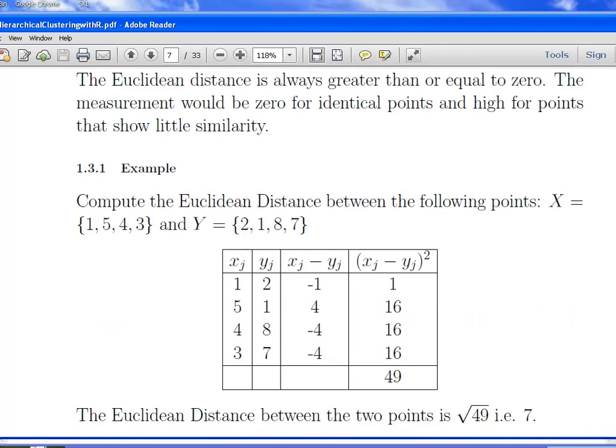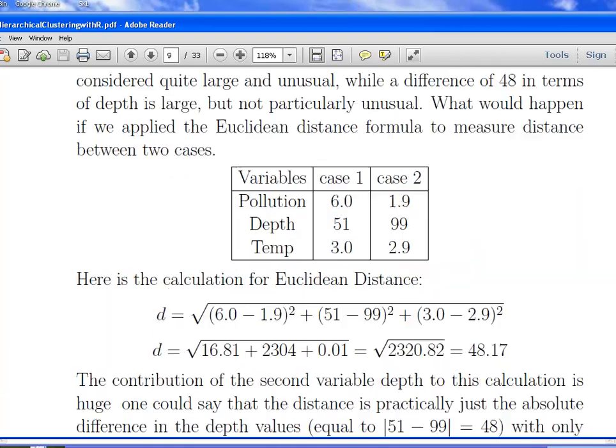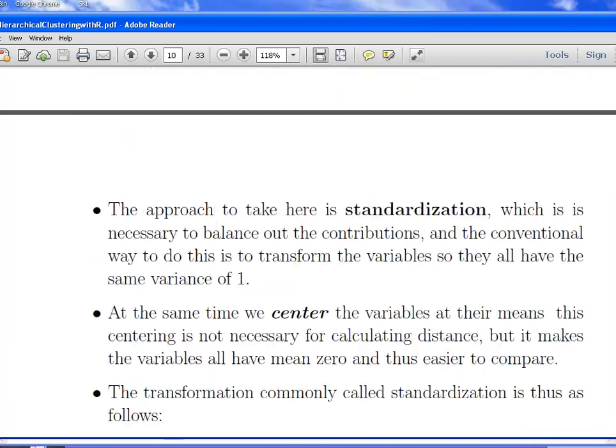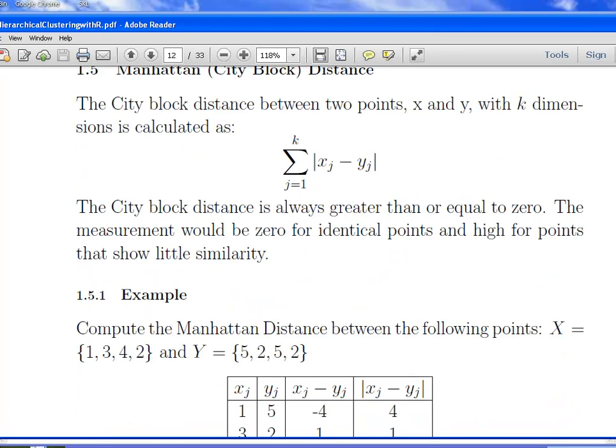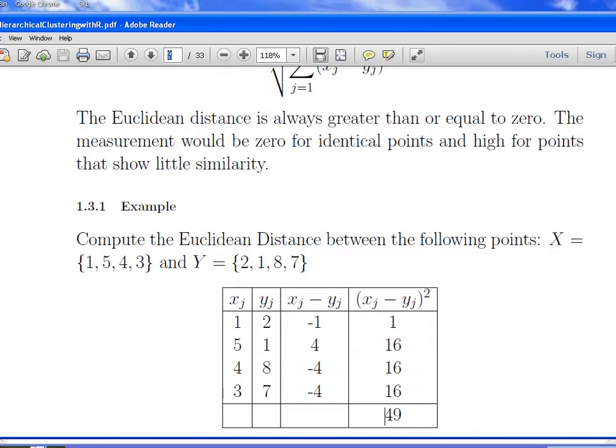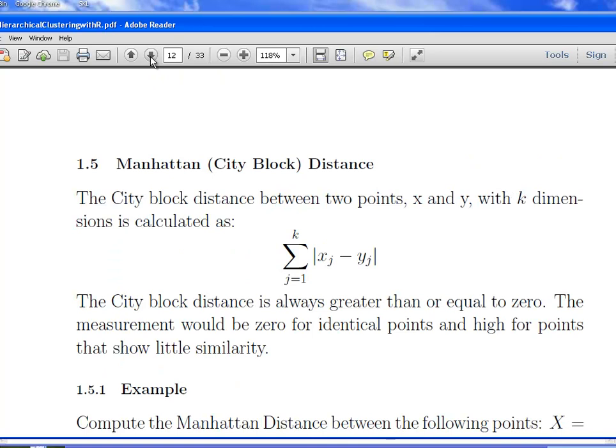I'm going to talk about standardization in the next presentation. But what I'm going to do now is just talk about the Manhattan city block distance. It's one more type of distance. The city block distance between two points, x and y, k-dimensions as follows. It's the sum of the absolute values of the differences. It's always greater than or equal to zero, and it would be zero for identical points and high for points with little similarity. Let's look at a quick example here.